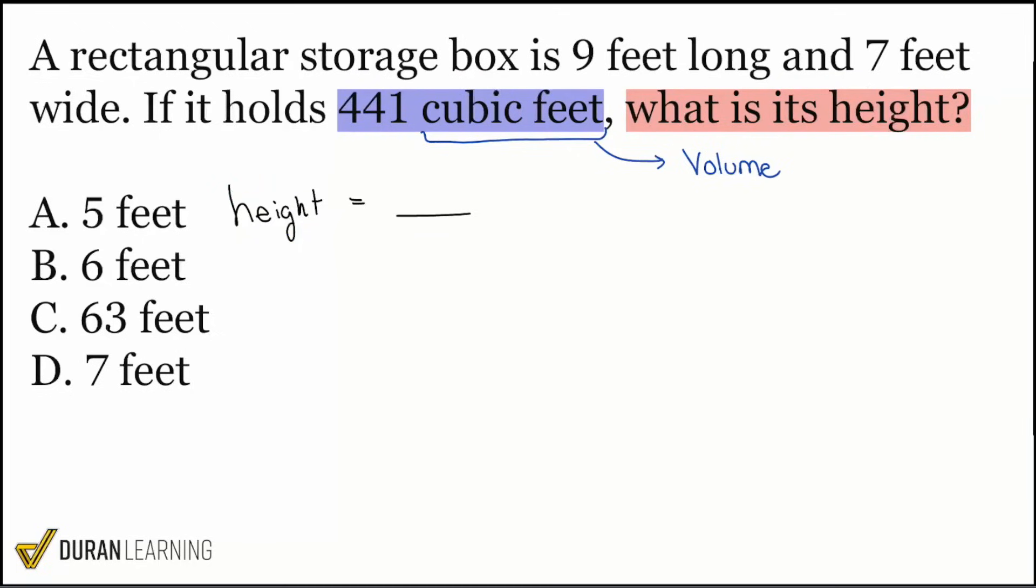I noticed right over here that it says a rectangular storage box. So we're dealing with a rectangular prism. And then it says we have nine feet in length, seven feet in width. We're looking for that height. So I think we all know where this is going. What's my formula? It's going to be volume equals length times width times height. And what we have to do from here is plug in what we have. 441, that's the volume. The length, given to us as nine. That width, given to us as seven. And we're looking for that height.